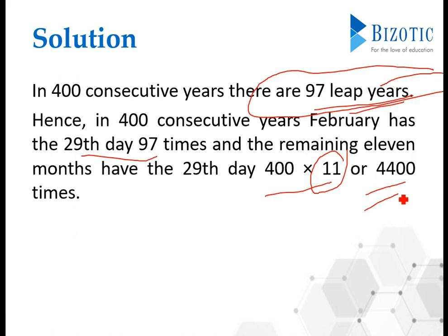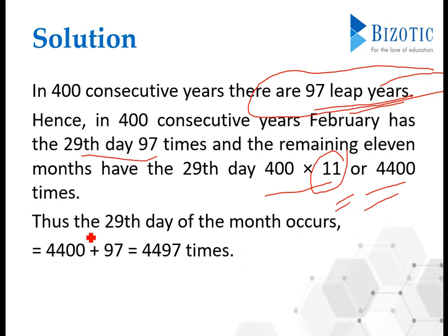In that case, February has not been added because we have considered only 11 months. Now what you need to do is 4400 plus 97, which is the February 29th leap year days. It will give you 4497, giving you the required answer: option C, 4497.